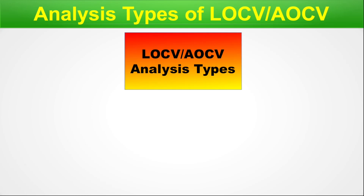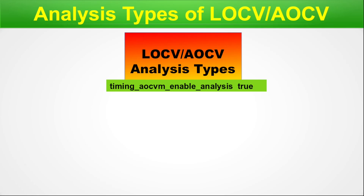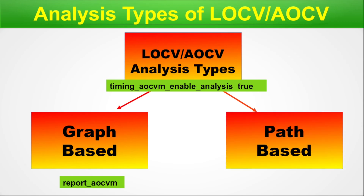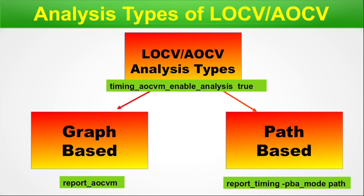Analysis types of AOCV or LOCV. There are two basic types. To enable AOCV, use the command: set_timing_aocv_enable_analysis true, which invokes the AOCV engine to read the respective AOCV inputs and process the design. The first type is graph-based analysis, invoked using report_aocv. The second type is path-based analysis, invoked by report_timing with the dash option -ocv_mode path. These are the key commands to invoke the AOCV method inside the timing tool.